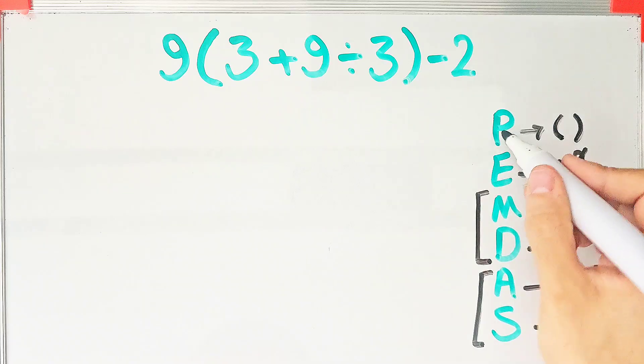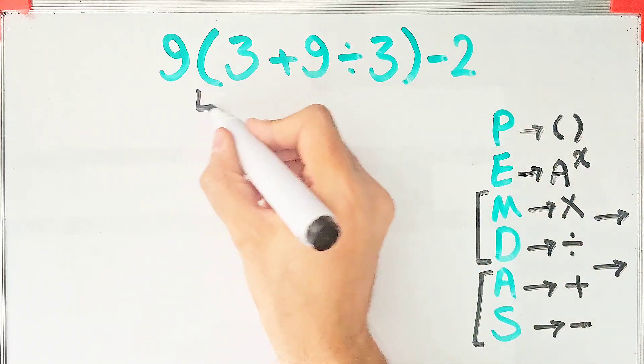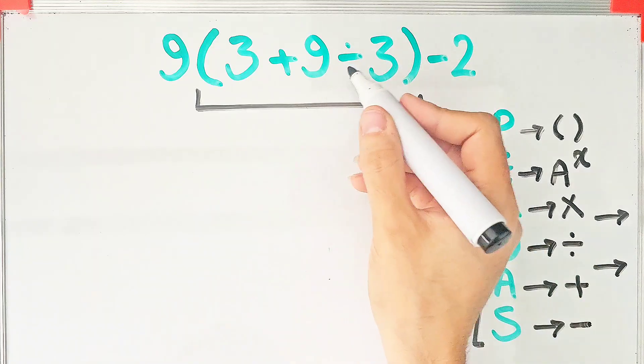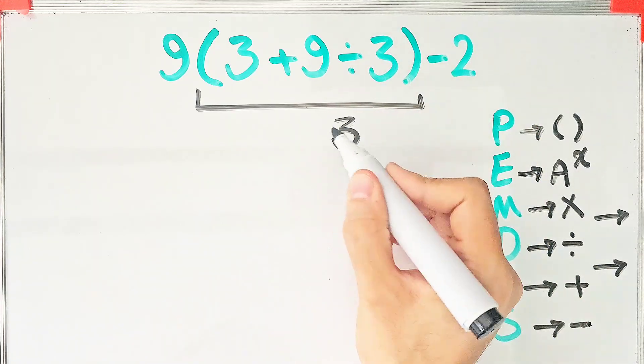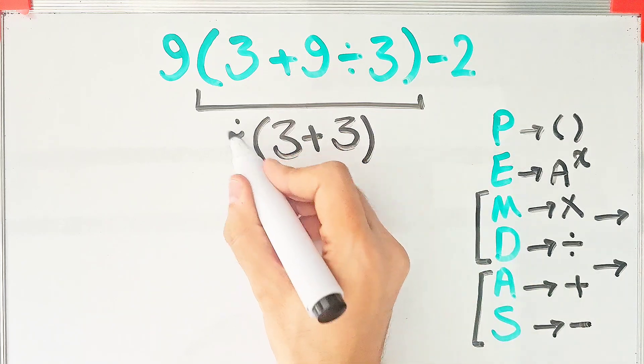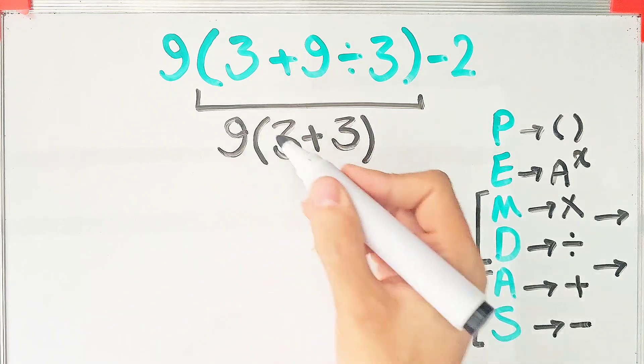According to the PEMDAS rule, first we simplify the parenthesis. Inside the parenthesis, we have addition and division. First, we do this division: 9 divided by 3 equals 3. We have 3 plus 3 inside the parenthesis, and the question is 9 times 3 plus 3, then minus 2.